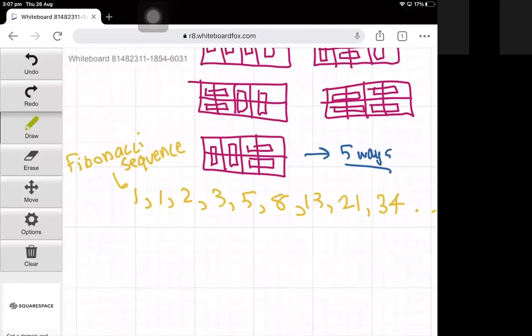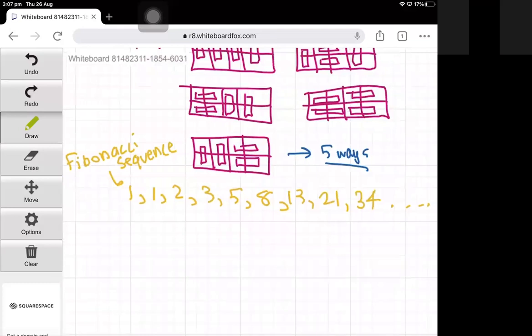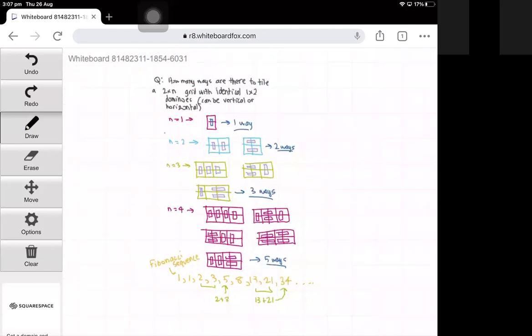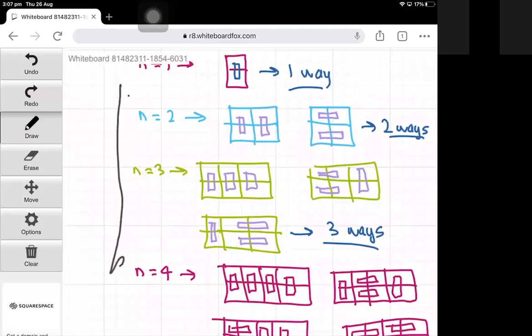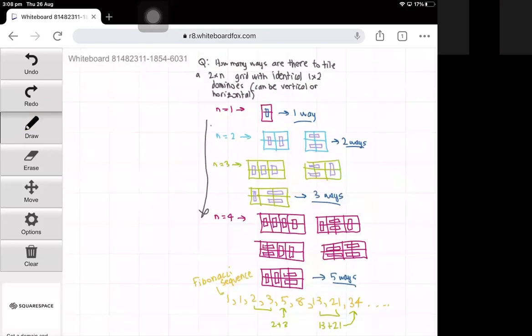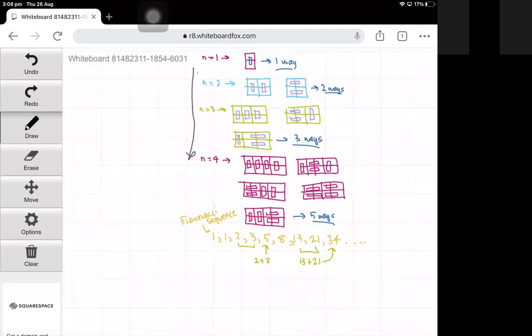In the Fibonacci sequence, each term is the sum of the two terms that come before it. So for example, 5 equals 2 plus 3, and 34 equals 13 plus 21. This is how the Fibonacci sequence works. But the question is, how can we prove that the answer is the Fibonacci numbers?